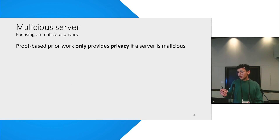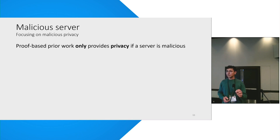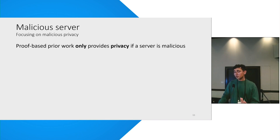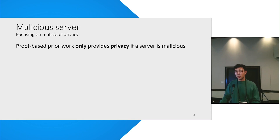One avenue of improvement is to not focus on end-to-end malicious security, but just focus on our original goal of achieving privacy. Prior works which use distributed proofs also provide just privacy — they're not going for end-to-end malicious security because you lose all the efficiency guarantees if you start chasing that more difficult goal.